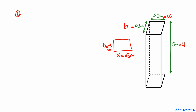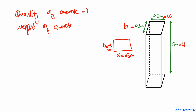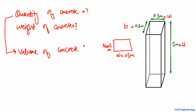We want to find out the quantity of the concrete for this column, and also the weight of the concrete, in a very simple and easy way. First of all, the quantity of the concrete is basically the volume of the concrete. To find out the volume, we just have to find out the volume of the column, which can be found by multiplying the three dimensions: the length or height of the column, multiplied by the width, multiplied by the breadth.